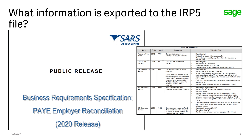The file will export the employer details first, and this will be the information as completed on your basic company information screen, followed by each employee's information. This file works with source codes, so each set of information that's exported to the IRP-5 file is represented by a source code, and the BRS will then provide the respective validation rules for each field. The source codes are also IRP-5 codes when it comes to the financial values.